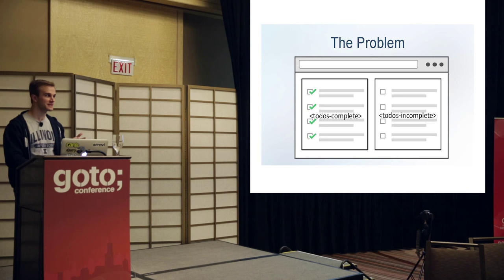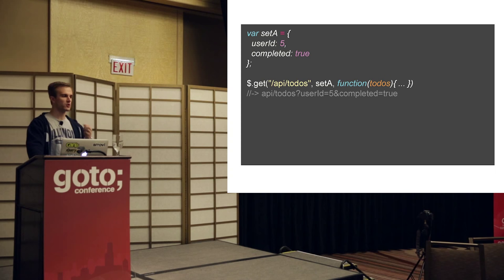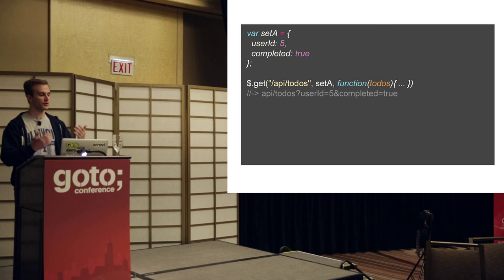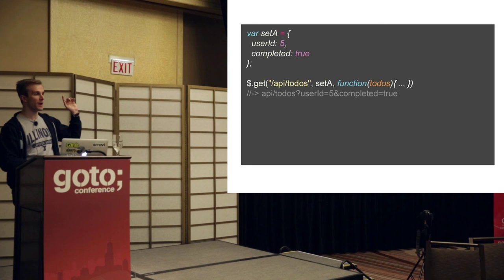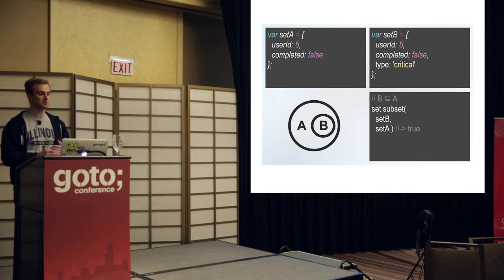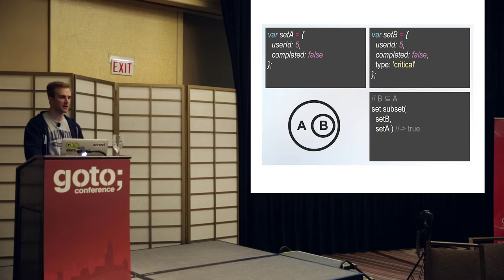Whenever you request data from a server, you're providing a representation of the set of data you want. If I wanted all to-dos for user five that are completed true, I might do something like this — and set A represents that set. If you treat that like a set, you can compare it to other sets. Set B is user five's critical incomplete to-dos. Set B represents a subset of set A. So if I've already loaded set A, I don't have to load set B's data. We created a low-level library that allows set comparisons with objects like these, and also lets you create custom set algebra for ranges, enumerable properties, or Boolean-type properties — for example, knowing that a range from 0 to 50 is a subset of a range from 0 to 100.